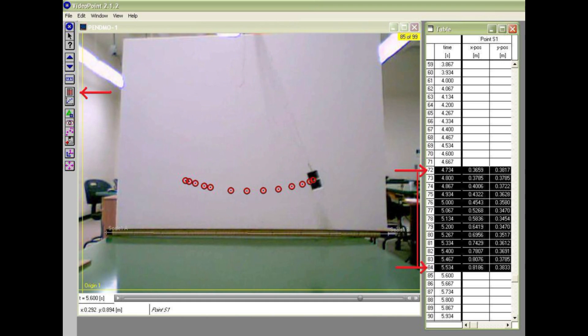Open a data table window using the appropriate icon to the left. The table displays the frame number, the time, and the x and y positions in meters. Note that most of the frames are blank since you did not click on them. Highlight the data you collected by dragging over the frame numbers and copy the data for transfer to the plotting program called graphical analysis.